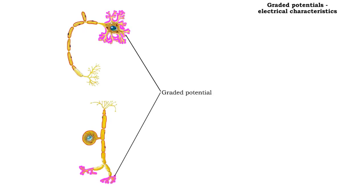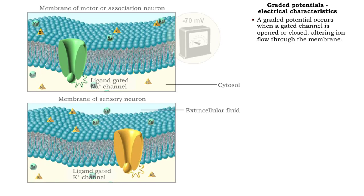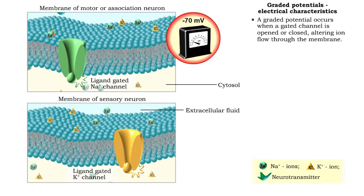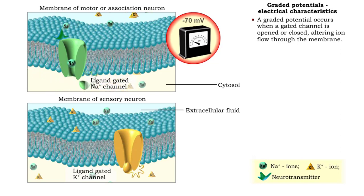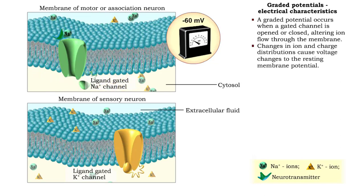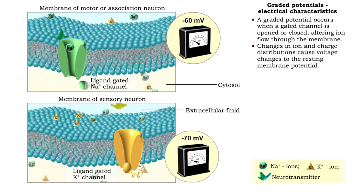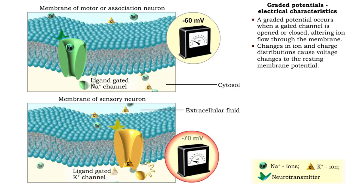A variable deviation of the resting membrane potential voltage value is known as a graded potential. A graded potential occurs when a stimulus opens or closes a gated ion channel, and the voltage of the resting membrane potential is altered because of the change in ion and charge distribution.